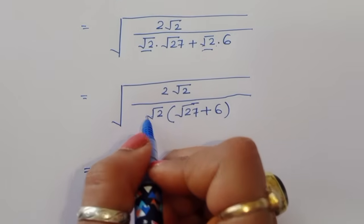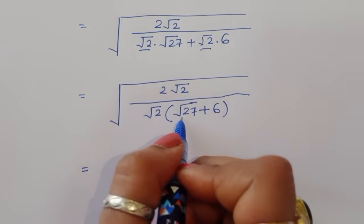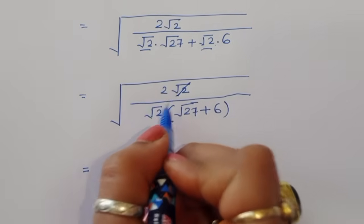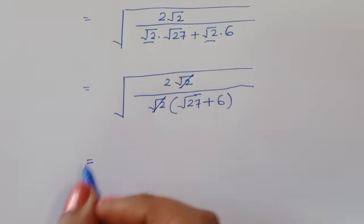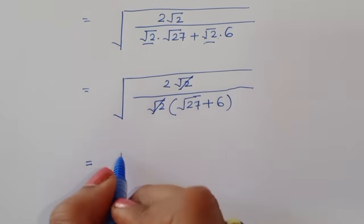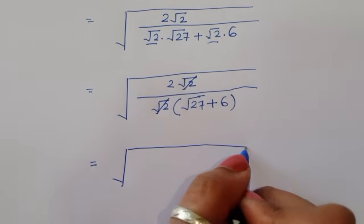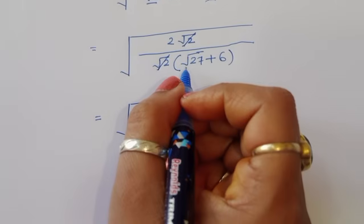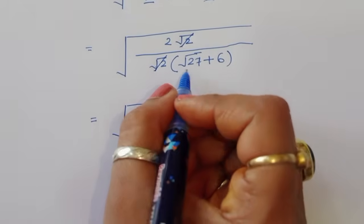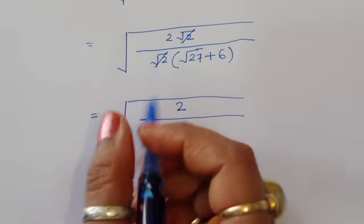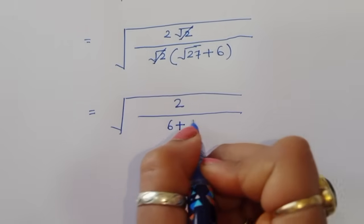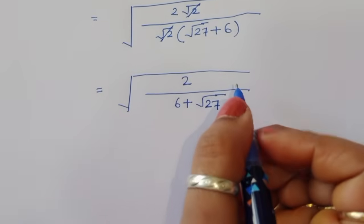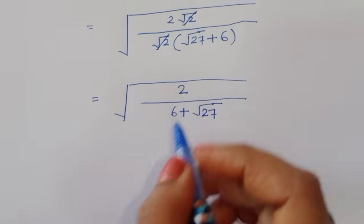We have 2 times square root of 2 divided by square root of 2 times (square root of 27 plus 6). The square root of 2 cancels from numerator and denominator, leaving 2 divided by (6 plus square root of 27).